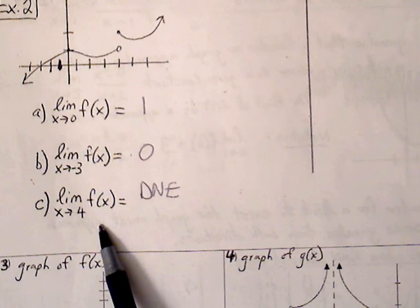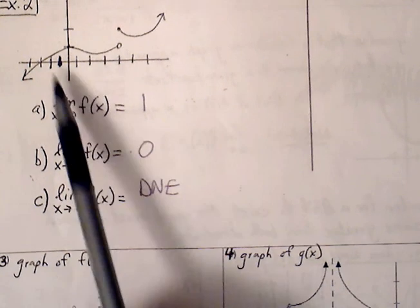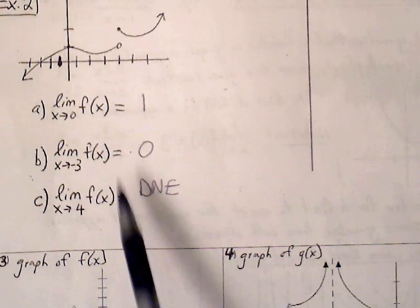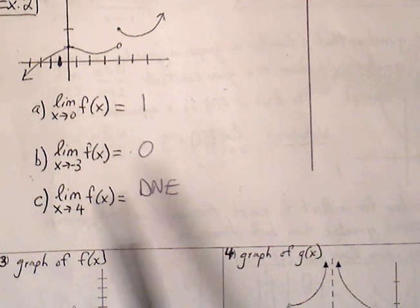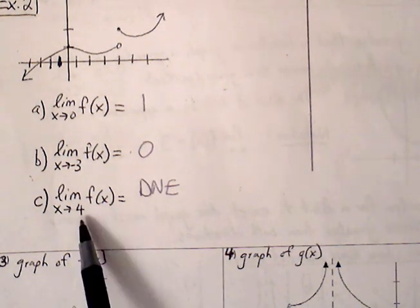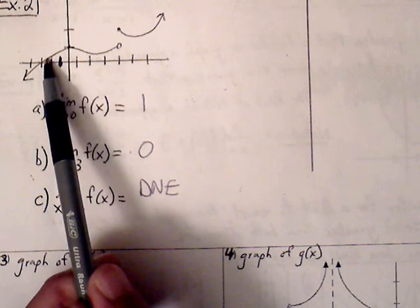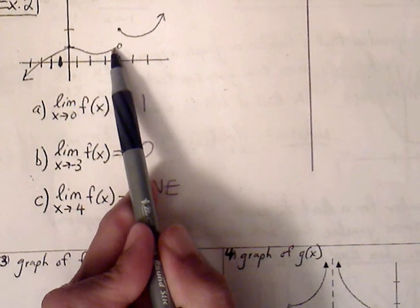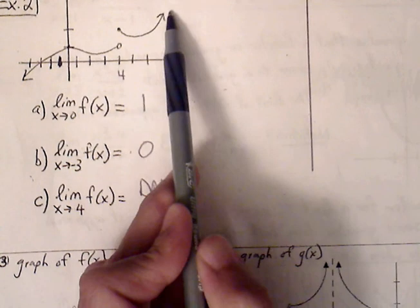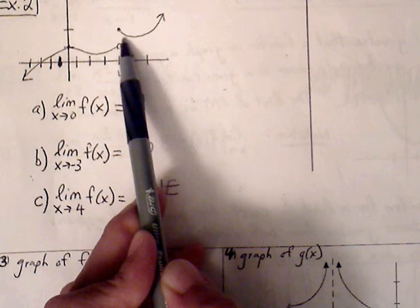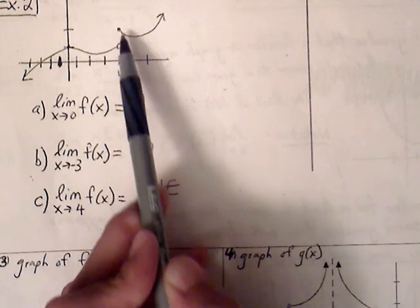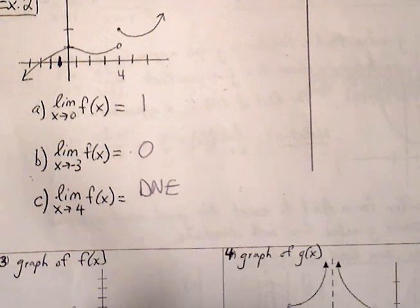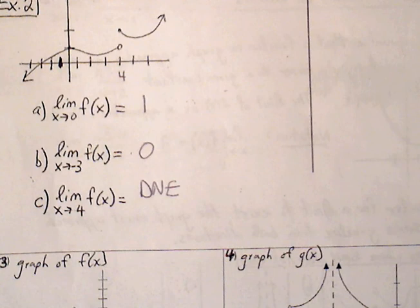However, look at part c: limit as x approaches 4. The ordered pair is going to be at 2, but the limit is not going to exist because there's no agreement from both sides of 4. Looking at the left branch, as we approach 4 from the left, the graph is approaching a different y-value. So the limit does not exist because there is no agreement between the two branches of the graph.